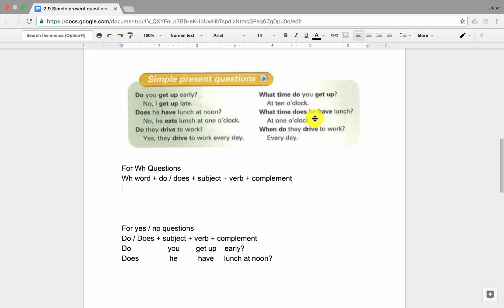Let me select the first question on the right side of the chart. What time do you get up? What time is the WH word. Do is the auxiliary verb. You is the subject. Get up is the verb.